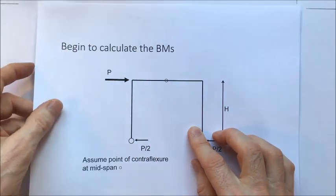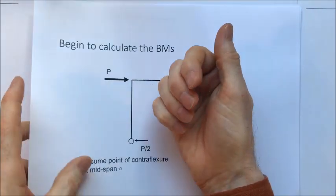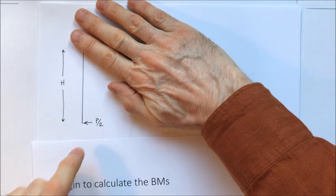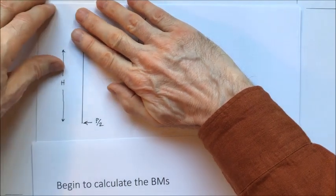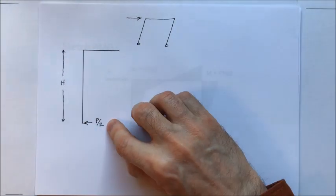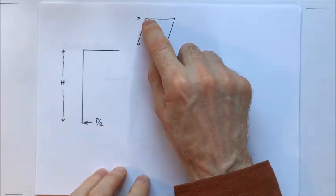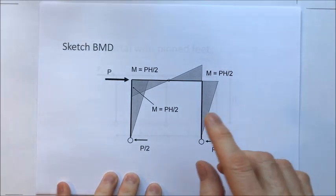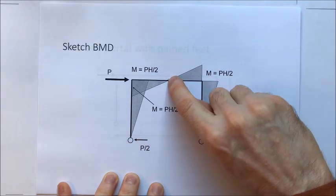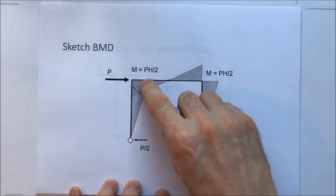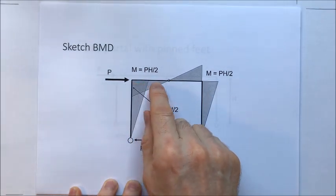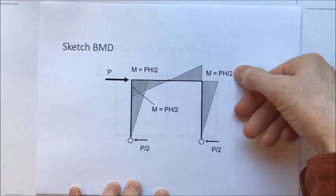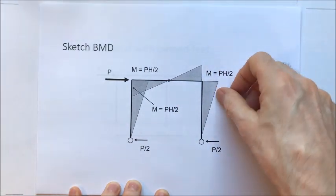We can split this structure down and treat each leg as a fixed cantilever. The bending moment at the bottom is zero, and at the top it's P/2 times H. We know which joints are opening and which are closing, and we can gradually draw out the bending moment diagram. The result: zero bending moment at the pins and at our artificial pin we introduced. The bending moment in the leg is PH/2, so the bending moment in the beam must also be PH/2, drawn on the tension face — same at the other end.